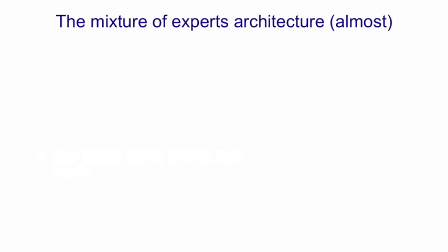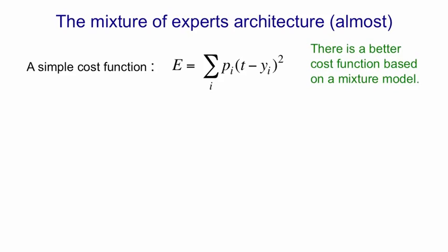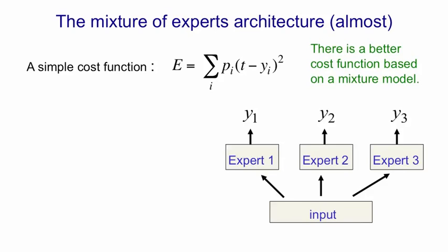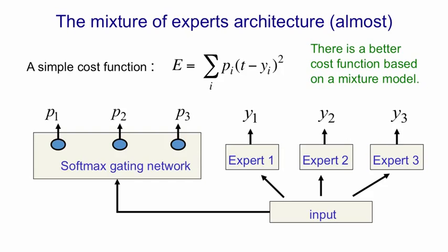So here's a picture of the mixture of experts architecture. Our cost function is the squared difference between the output of each expert and the target averaged over all the experts, but with the weights in that average determined by the manager. There's actually a better cost function we'll come to later based on a mixture model, but this was the cost function I first thought of, and I think it's easier to explain the intuition with this cost function. So we have an input. Our different experts all look at that input. They all make their predictions based on that input. In addition, we have a manager. The manager might have multiple layers, and the last layer of the manager is a softmax layer. So the manager outputs as many probabilities as there are experts. And using the outputs of the manager and the outputs of the experts, we can then compute the value of that error function.